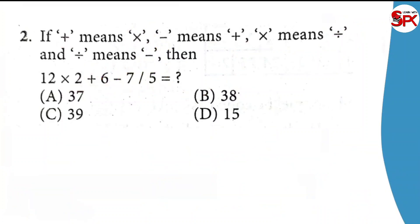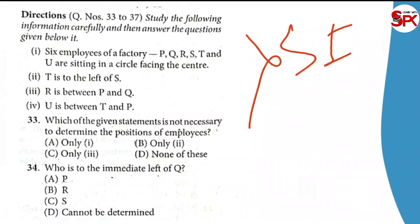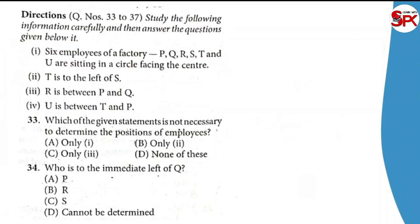So if you are able to find the next question, this will help you. So you can find the question and the answer. The answer will be — I will answer the question. What is ranking and sitting arrangement? So, sitting arrangement. I will tell you the question. Six employees of a factory —